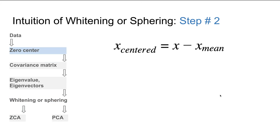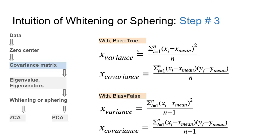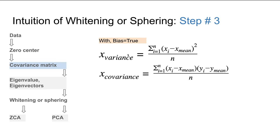Here is the intuition for the calculations. When we center the data, x_centered is obtained by subtracting the mean of each feature from the individual values. For variance, we subtract the mean from each individual value, square that, sum it, and divide by n (when bias=True). For covariance, instead of squaring we multiply the differences from the means for different features — for example, subtracting x_mean from x and y_mean from y, multiplying them together, summing, and dividing by n.